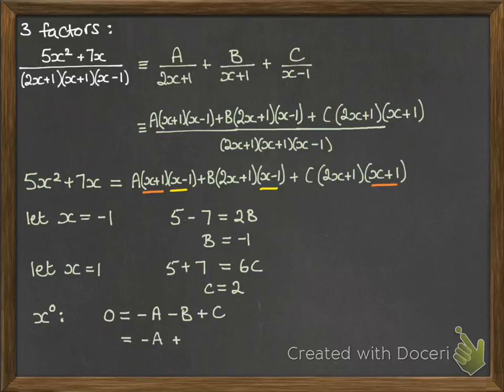And then our constant term, see I'm combining the two methods here because there isn't a straight, well I think it's easier to just look at the constant terms now that we've got two of the terms. So on the left hand side we've got no constants, we've just got zero.